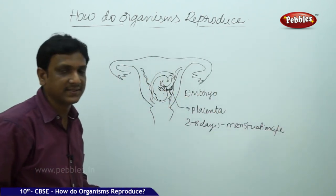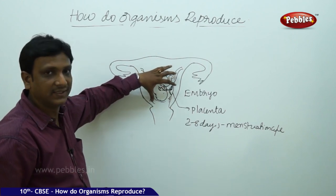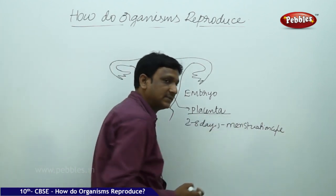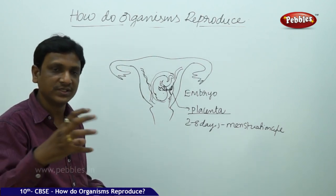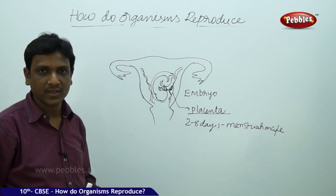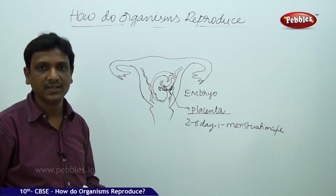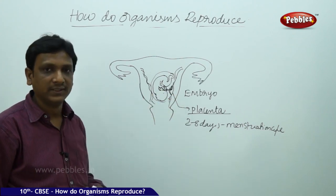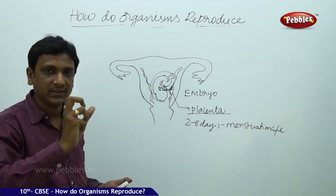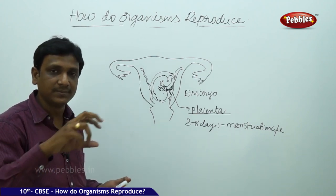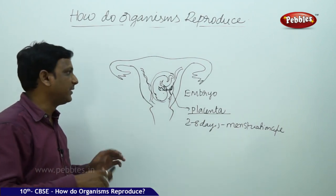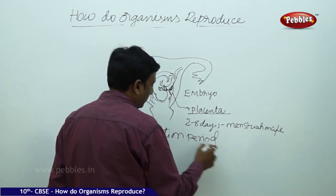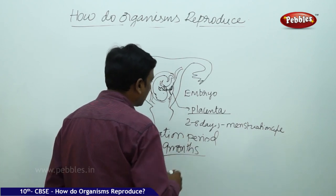If fertilization takes place, the embryo grows, fixes in the uterus, and the walls are lined with blood and mucus — called the placenta. The placenta is rich in glucose and oxygen, providing nutrients to the baby for its growth. As the embryo grows into a baby, an umbilical cord forms from the placenta connected to the baby, providing all nutrients, oxygen, and helping remove waste materials. The total period of development is called gestation — approximately nine months — after which the baby is born.